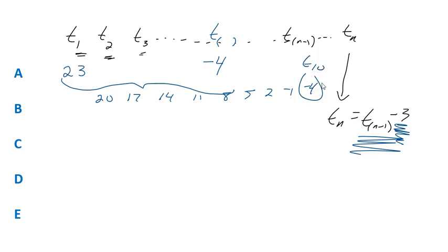So t sub 10. The question is, when you reach negative 4, what is the value of n? Well it's 10. That's probably the quickest way to answer the question.